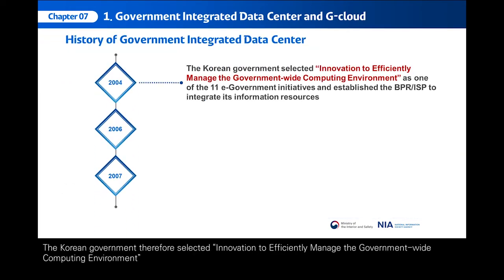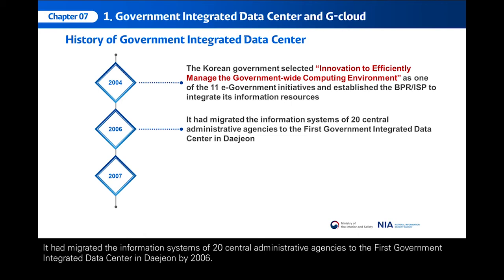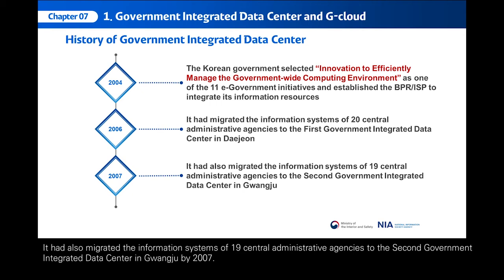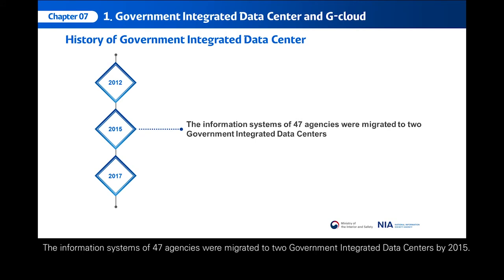The Korean government selected innovation to efficiently manage the government-wide computing environment as one of 11 key e-government projects, and established the BPR/ISP in 2004 to integrate its information resources. It had migrated the information systems of 20 central administrative agencies to the first Government Integrated Data Center in Daejeon by 2006, and migrated 19 central administrative agencies to the second center in Gwangju by 2007. The information systems of 47 agencies were migrated to two Government Integrated Data Centers by 2015.